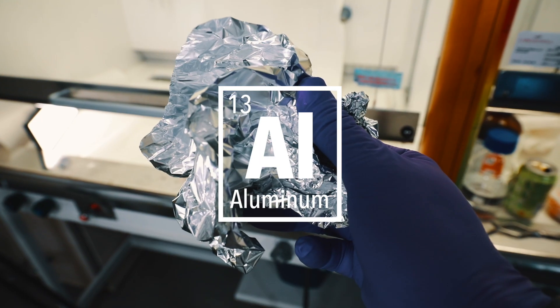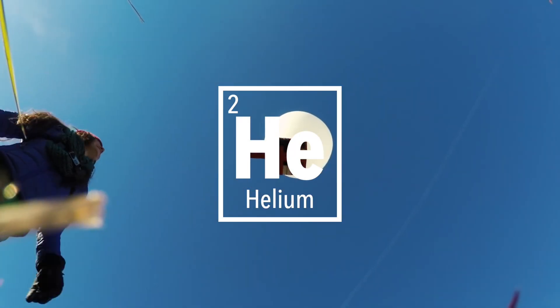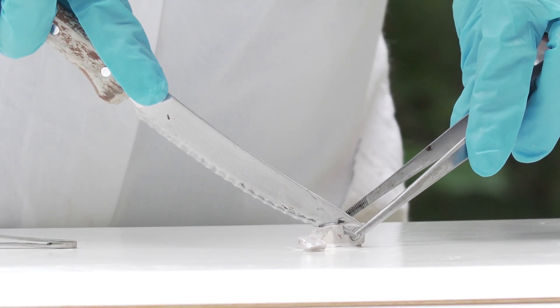So an element is something that is made up of only one type of atom. Like, for example, helium gas. Or, like in our first experiment, the metal sodium.